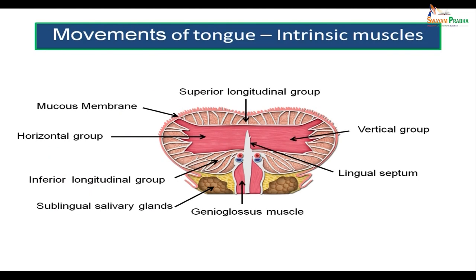Now we come to the intrinsic group of muscles. The intrinsic muscles include the superior longitudinal group running along the upper surface of the tongue, the inferior longitudinal group running along the inferior surface, the horizontal group extending from the fibrous septum towards the side of the tongue, and the vertical group running vertically between the superior and inferior longitudinal groups. So there are four sets of intrinsic muscles: superior longitudinal, inferior longitudinal, horizontal, and vertical.